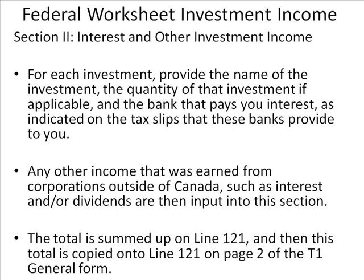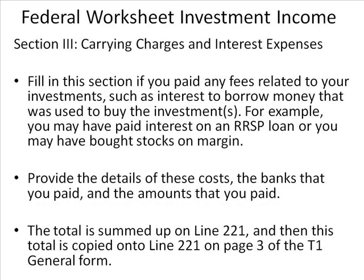Section 2 covers interest and other investment income. For each investment, provide the name, quantity if applicable, and the bank that pays you interest as indicated on the tax slips. Any other income earned from corporations outside of Canada, such as interest and/or dividends, are put into that section. The total is summed on line 121 and copied onto line 121 on page 2 of the T1 General Form. Section 3 covers carrying charges and interest expenses. Fill in this section if you paid fees related to your investments, such as interest to borrow money used to buy investments — for example, interest on an RSP loan or buying stocks on margin. Provide the details, banks, and amounts paid. The total is summed on line 221 and copied onto line 221 on page 3 of the T1 General Form.